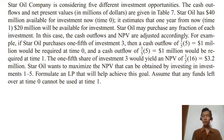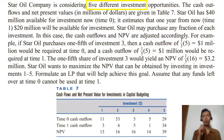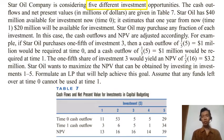Star Oil Company is considering five different investments. We can see in the table that each investment has its own cash outflow in time zero and time one. Outflow means these numbers are the amount of money that you have to pay at time zero and time one for each investment. And then for each investment, the table also shows the NPV, the net present value.